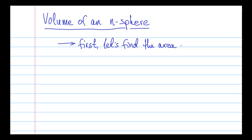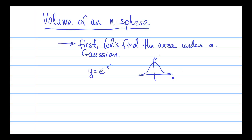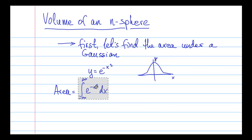So the question we want to ask is, what is the area under the simple Gaussian e to the minus x squared? And to do that we just integrate this expression from minus infinity to plus infinity, and the question is, how do we do this integral?